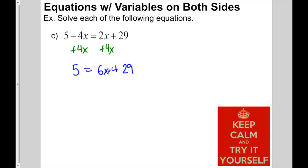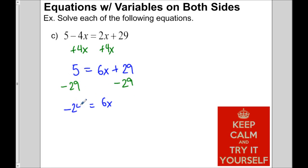The variable term is on the right, so we get rid of the negative 29 — actually subtract 29 from both sides. We're left with 6x on the right and 5 minus 29 is negative 24 on the left. The 6 is multiplying with x, so we divide both sides by 6. At the end, x equals negative 4.